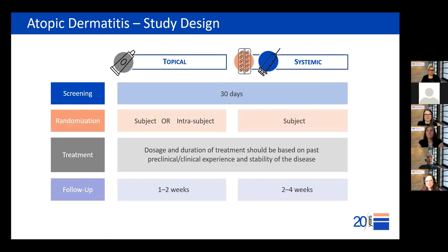For AD trials involving topical or systemic agents, we recommend a screening period of 30 days to allow subjects using medications that need to be stopped at least 28 days prior to baseline to wash out. Randomization in AD trials can be at the subject level or within subjects, depending on whether the investigational agent is topical or systemic. There are multiple advantages to the intra-individual design, including a reduction in inter-subject variability.